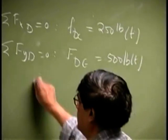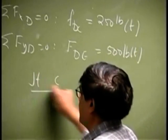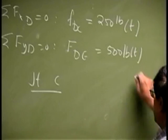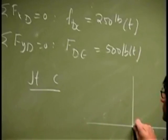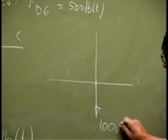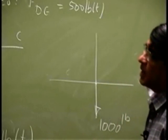Then the next choice will be joint C. See, any time when you want to make a choice, you pick a joint where you have maximum of 2 unknowns. So, since we know DC, so if pick C, at C, there is a force going down, that is 1000 pounds, then the...